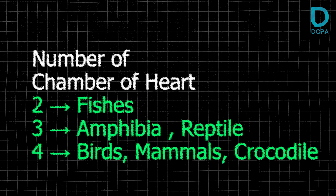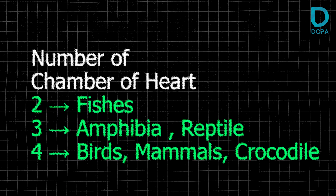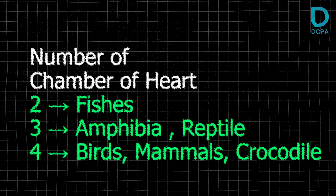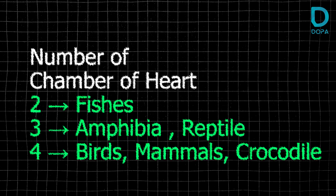Now, the number of chambers of the heart: fishes have 2 chambers, amphibians and reptiles have 3 chambers, and crocodiles, birds, and mammals have 4 chambers.